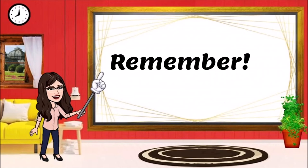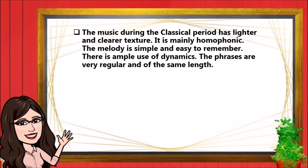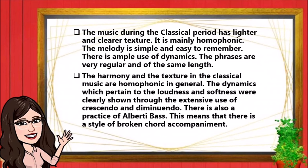Remember! The music during the classical period has a lighter and clearer texture. It is mainly homophonic, and the melody is simple and easy to remember. There is ample use of dynamics, and the phrases are very regular and of the same length. The harmony and texture in classical music are generally homophonic. Dynamics — pertaining to loudness and softness — were clearly shown through the extensive use of crescendo and diminuendo. There is also the practice of Alberti bass, which means a style of broken chord accompaniment.